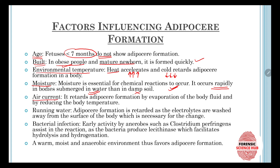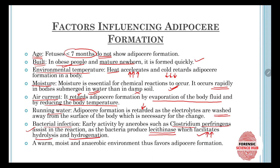Air current retards adipocere formation by evaporating body fluid and reducing body temperature. Running water also decreases formation as electrolytes are washed away from the body surface, which are necessary for the change. Bacterial infection — early activity by anaerobes such as Clostridium perfringens assists the reaction, as the bacteria produce lecithinase which facilitates the hydrolysis and hydrogenation process.